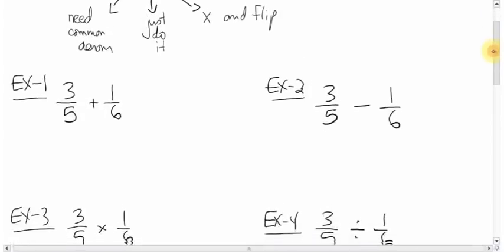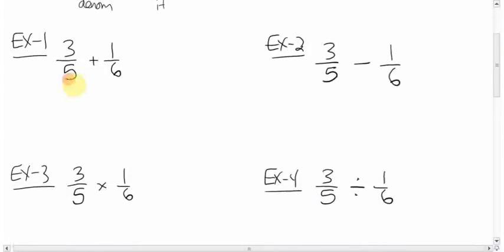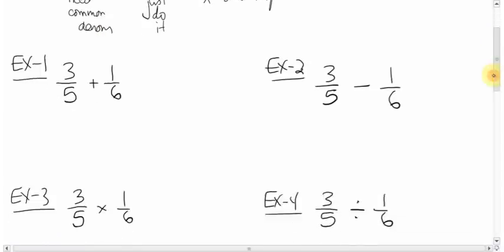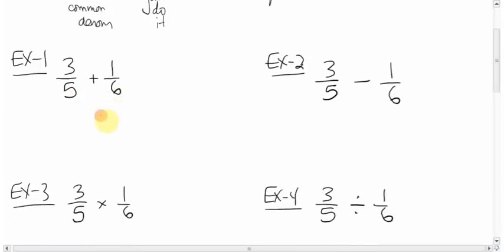Let's take a look just to refresh our memories on these identical looking questions, but they all have different operations. Three-fifths plus one-sixth, three-fifths minus one-sixth, three-fifths times one-sixth, three-fifths divided by one-sixth. Okay, adding. You need a common denominator. Like it says here, need a common denominator when you add. Between five and six, the simplest way is just to multiply five and six and you get 30. Sometimes that gives you the lowest common denominator. In this case it does.